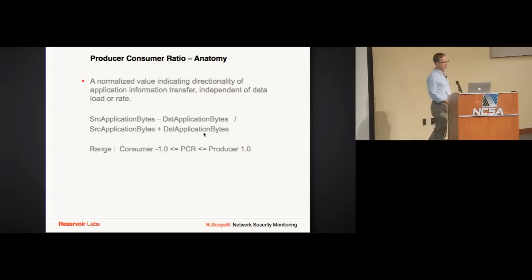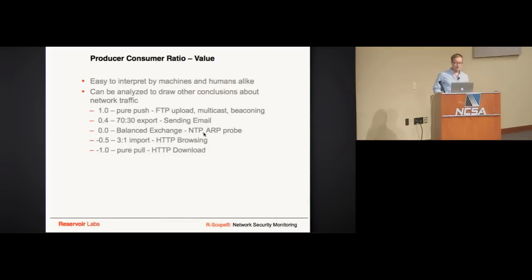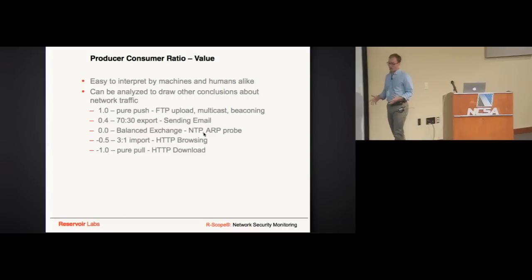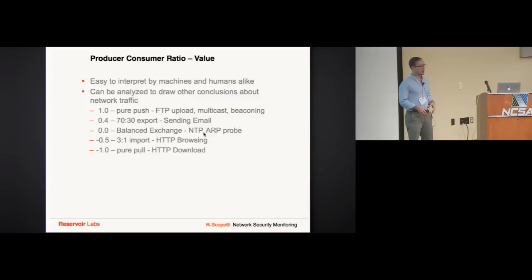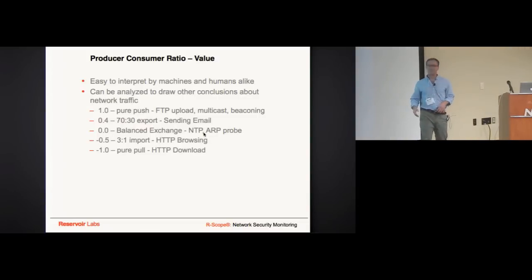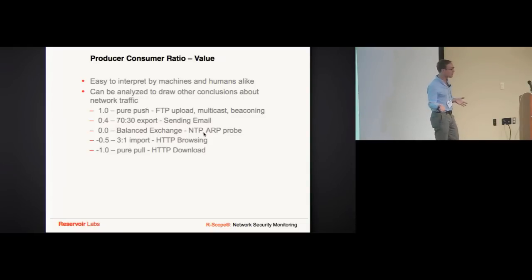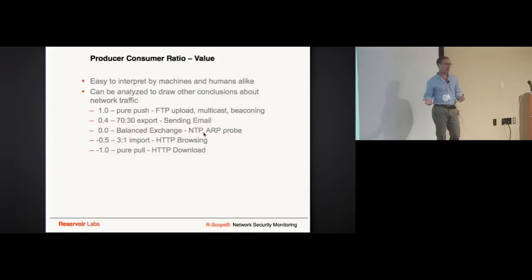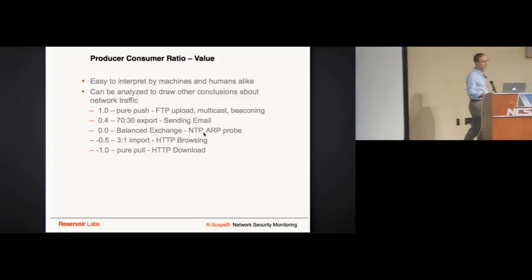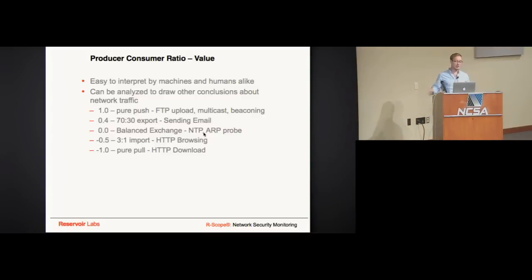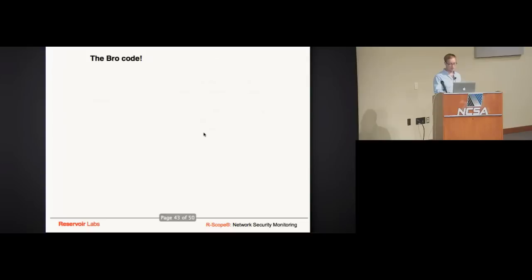It's an easy metric to interpret and I can write Bro policy on it easily. For example, I could say: if there is a data producer connecting to a host I don't know outside my normal networks, alert me. It kind of abstracts away raw byte counts and gives something repeatable and interesting. You can also baseline what normal network traffic looks like. DNS is pretty predictable — most DNS events have a PCR close to negative 0.71, meaning it's primarily a pull: you send a small request and get a lot of information back.